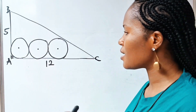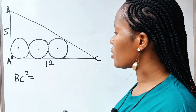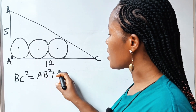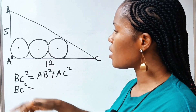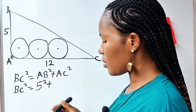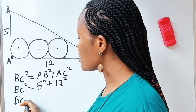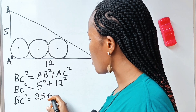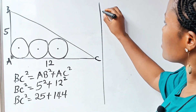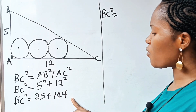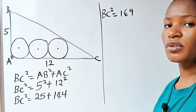Remember that this is a right-angled triangle, so BC squared should be equal to AB squared plus AC squared. BC squared equals 5 squared plus 12 squared, which is 25 plus 144. 5 plus 4 gives us 9, 2 plus 4 gives us 6, remaining 1 — so it gives us 169.